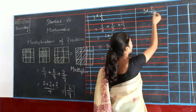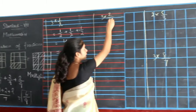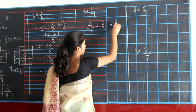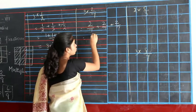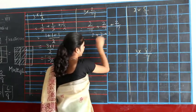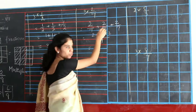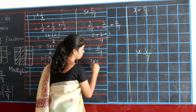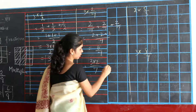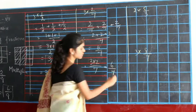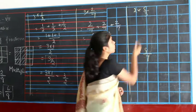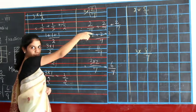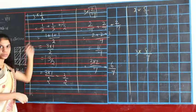Let's see another example. We have 3 into 2 by 7. So 2 by 7 plus 2 by 7 plus 2 by 7 gives you 2 plus 2 plus 2 divided by 7. 2 plus 2 is 4, 4 plus 2 is 6 by 7. Or 3 into 2 divided by 7 — 3 twos are 6 by 7. We have seen all this with proper fractions. 2 by 7 is a proper fraction and 1 by 2 is a proper fraction.